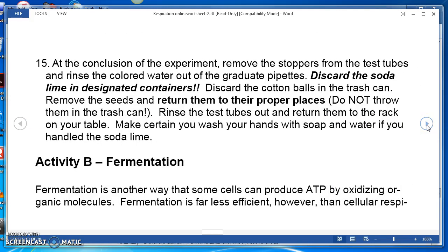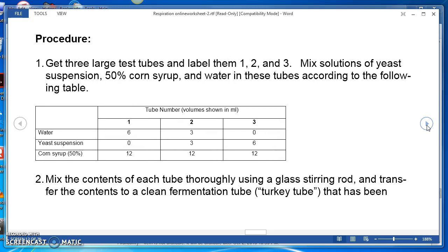For activity B fermentation, I will want you to graph that information. I have in a table the tube numbers with the volume shown in milliliters underneath them. So there's tube 1, 2, 3. There's 6 milliliters in tube 1, 3 milliliters in tube 2, 0 milliliters of water in tube 3.